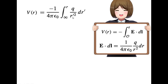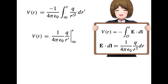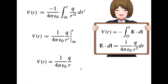The reference point is at infinity, so we integrate from infinity to r. We integrate (1/R²) dR, which gives minus (1/R). Applying limits from infinity to r, and multiplying by (1/4πε₀)Q, the upper limit gives (1/4πε₀)(Q/r) and the lower limit gives (1/4πε₀)(Q/∞) = 0. So the potential outside the sphere is V(r) = (1/4πε₀)(Q/r).